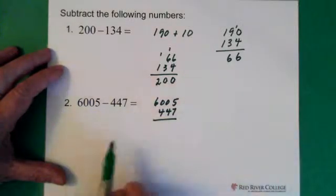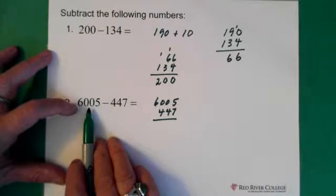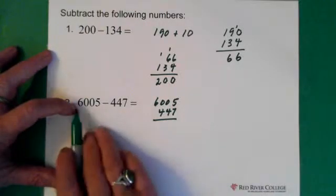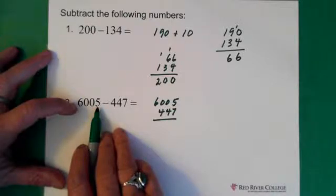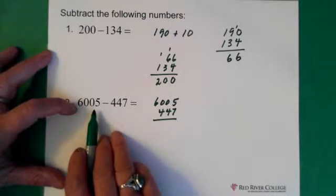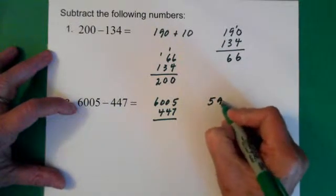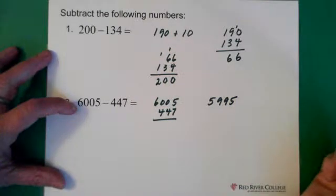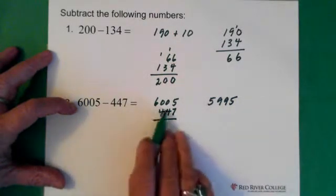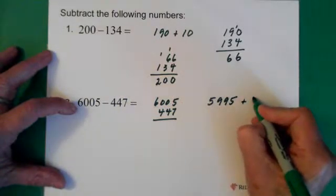If we're doing this by hand, sometimes you think, oh, I don't know, I'm not sure. But think money. 6,005 dollars. If you spent 10 dollars, you'd have 5,995 dollars. So, 6,005 is 5,995 plus 10.